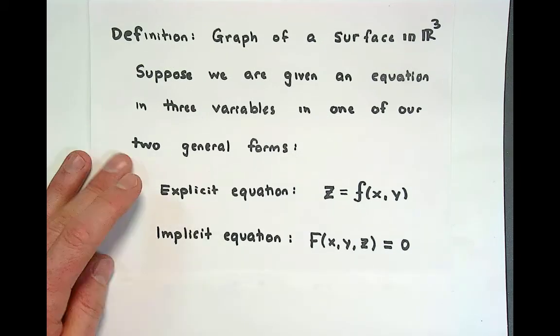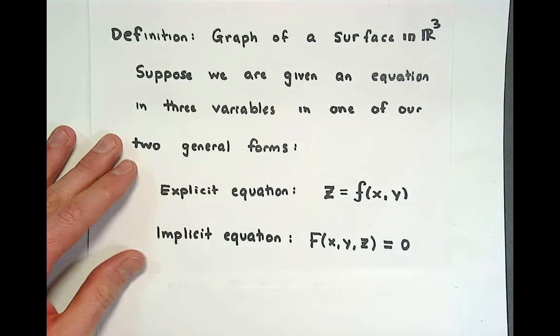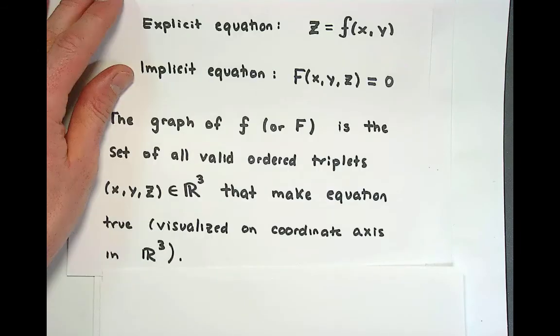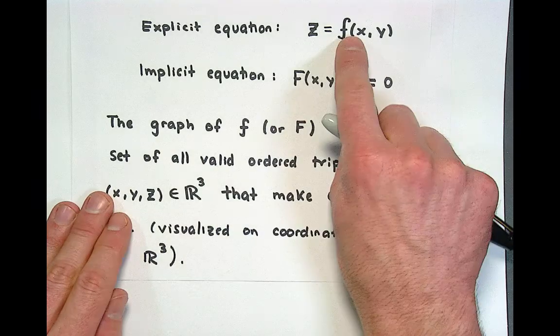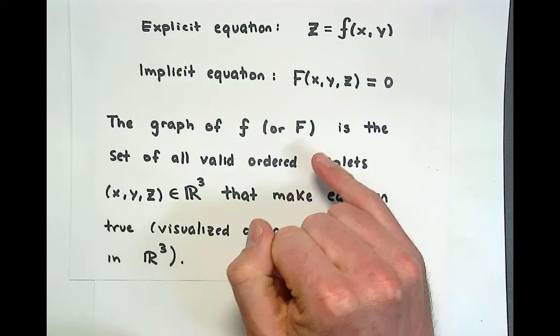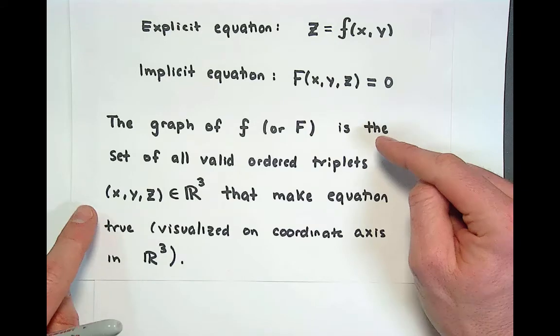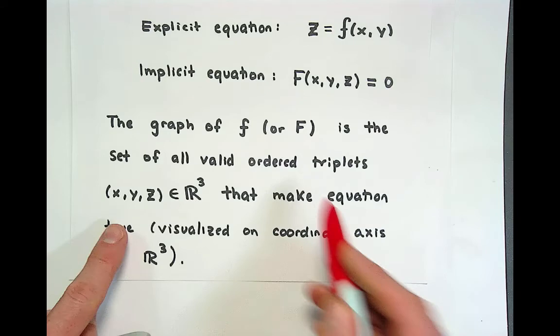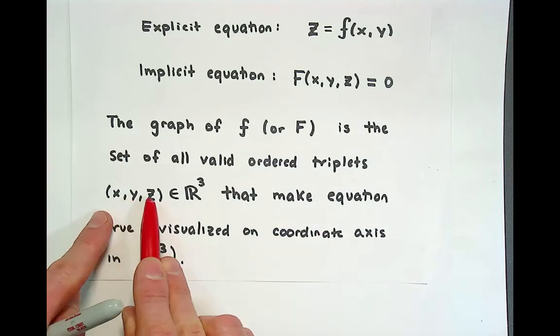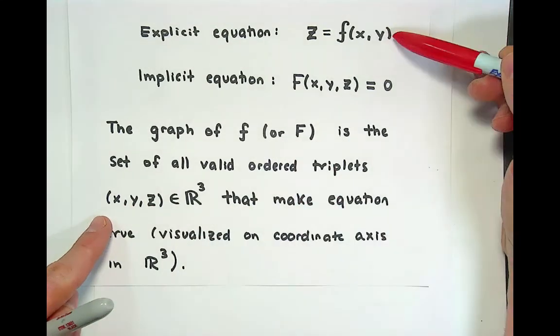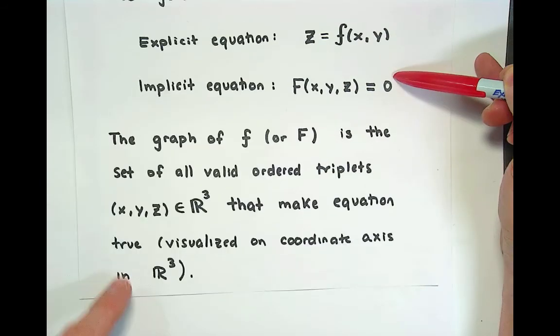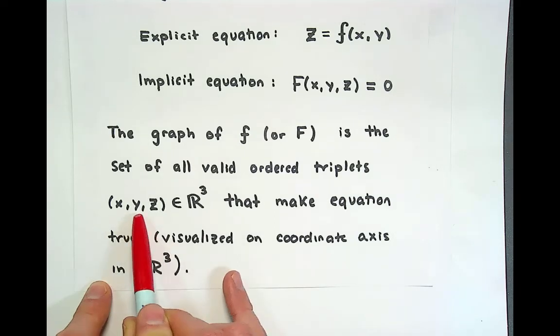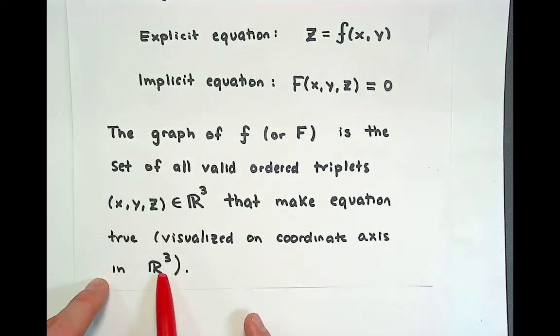Assuming we have one of these two situations we're going to define the graph of such functions, so we can call the graph of lowercase f or of capital F, they're actually you can use them interchangeably. The graph is the set of all valid ordered triplets x comma y comma z that make the defining equation true.